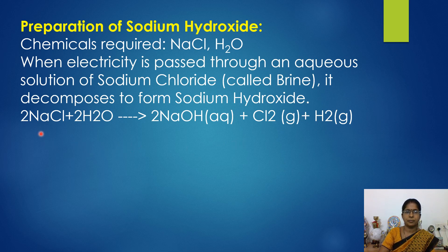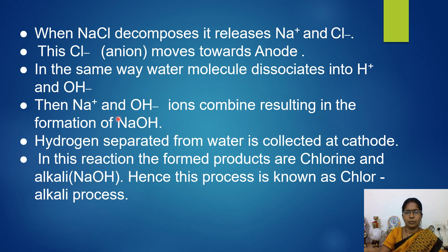2NaCl plus 2H2O gives rise to 2NaOH plus Cl2 plus H2. Once NaCl decomposes, it releases Na+ and Cl− ions. Whenever any compound releases positive and negatively charged ions, the negatively charged ion is known as an anion, and the positively charged ion is known as a cation.